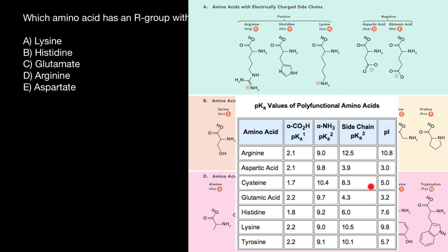Now, if we check pKa-3 or pKaR of all chargeable amino acids, we find that histidine has the pKa most closely matching physiological pH. The physiological pH is 7.4, and out of all seven chargeable amino acids, histidine has the closest number to it.